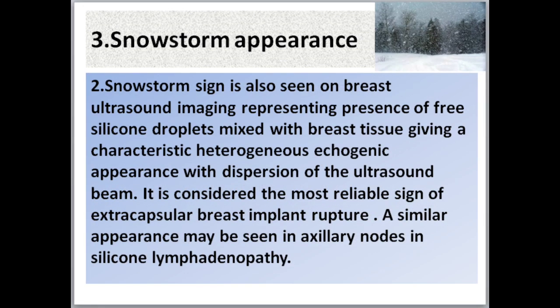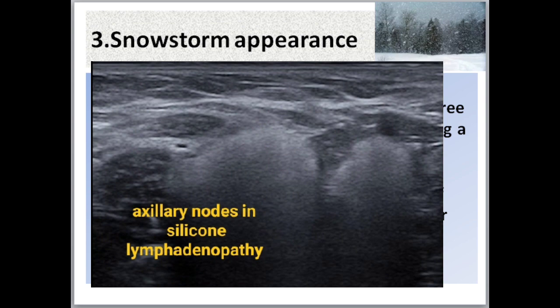Snowstorm sign is also seen on breast ultrasound imaging, representing the presence of free silicone droplets mixed with breast tissue, giving a characteristic heterogeneous echogenic appearance with dispersion of the ultrasound beam. It is considered the most reliable sign of extracapsular breast implant rupture. A similar appearance may be seen in axillary nodes in silicone lymphadenopathy.